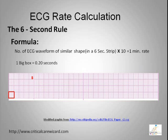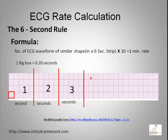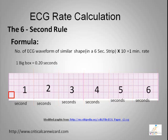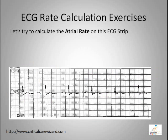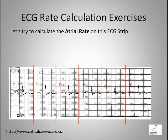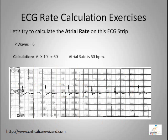Count five big boxes to the right, mark it as one second, and continue to six seconds. To calculate the atrial rate on this ECG strip, count the number of P-waves in the six-second strip. The number of P-waves is 6, so the atrial rate is 60 per minute.